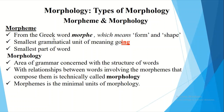Morpheme is a Greek term derived from the word 'morph', which means form and shape. Morpheme is the smallest grammatical unit of meaning — for example, in the word 'going', the morpheme is '-ing'. You can also say the smallest part of a word is a morpheme.